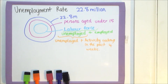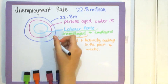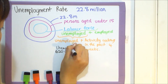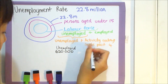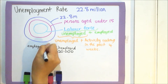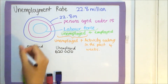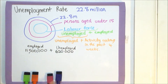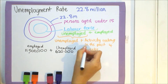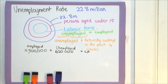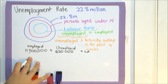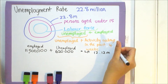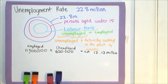From the Australian Bureau of Statistics, the number of unemployed persons equated to 620,000. The number of employed persons was 11,500,000. So using this calculation, the labour force is equal to the number of employed and unemployed persons, giving us a total of 12.12 million people.